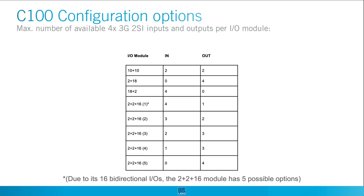Let's look at the maximum amount of 4x3G 2SI on a C100 system. When using 12G as source or destination, the maximum is currently 3 signals for a 40G connection in each direction. The 10+10 module has a maximum of 2 in, 2 out. The 2+18 has 0 in and maximum 4 out. The 18+2 has maximum 4 in and 0 out. The 2+2+16 module has 5 possible options: 4 in plus 1 out (though you can only transmit 3 12G signals at once), 3 in 2 out, 2 in 3 out, 1 in plus 3 out, and 0 in plus 4 out — in this last case you are limited to maximum 3 RX at the same time, with two outputs sharing the same RX signal.